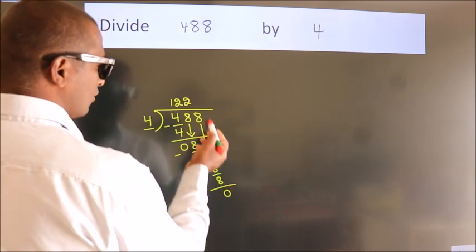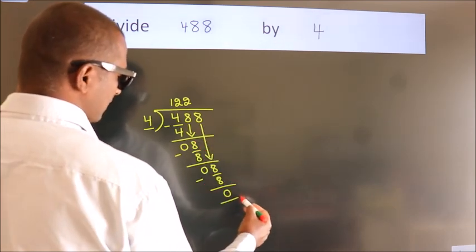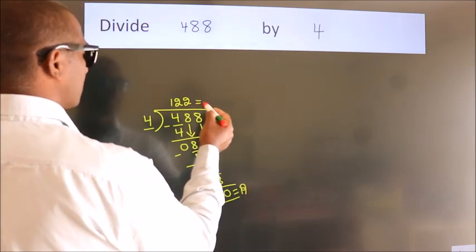After this, no more numbers to bring down. So we stop here. This is our remainder. This is our quotient.